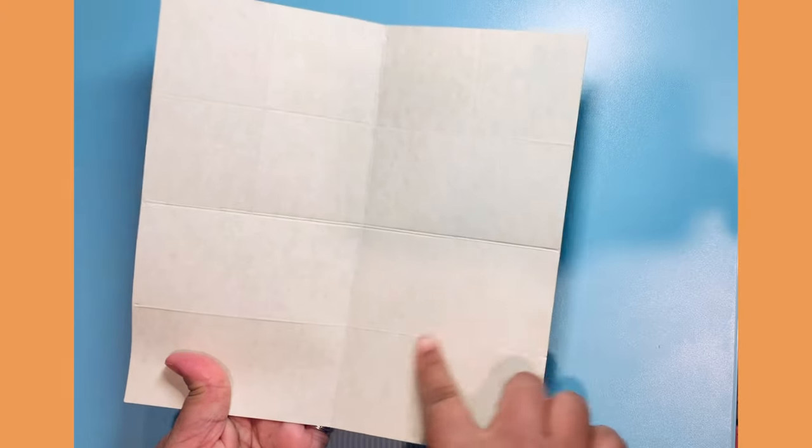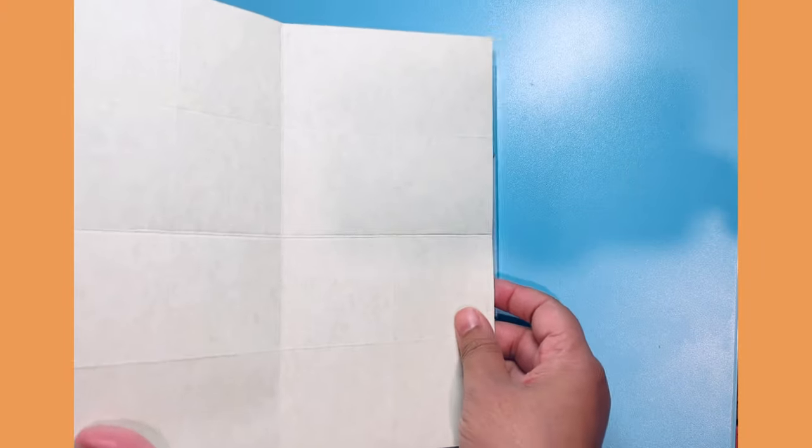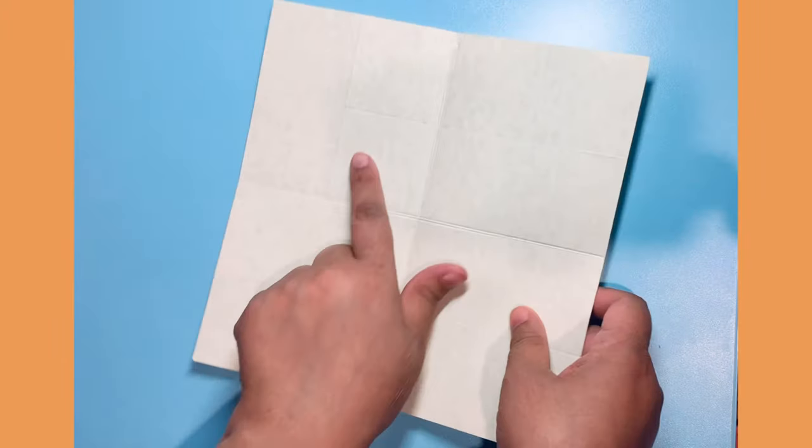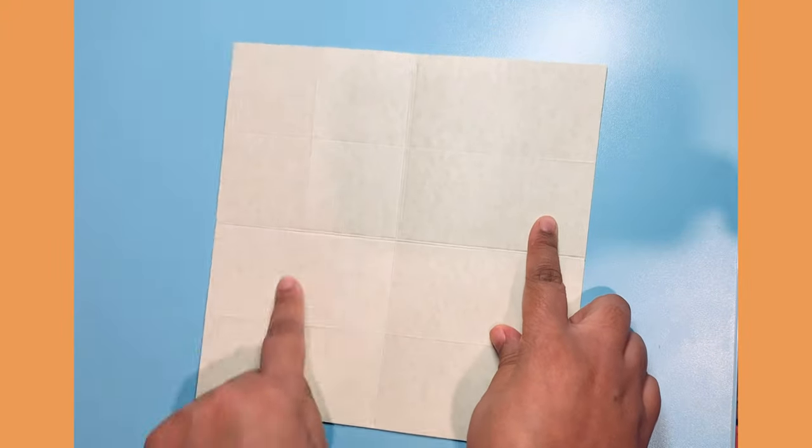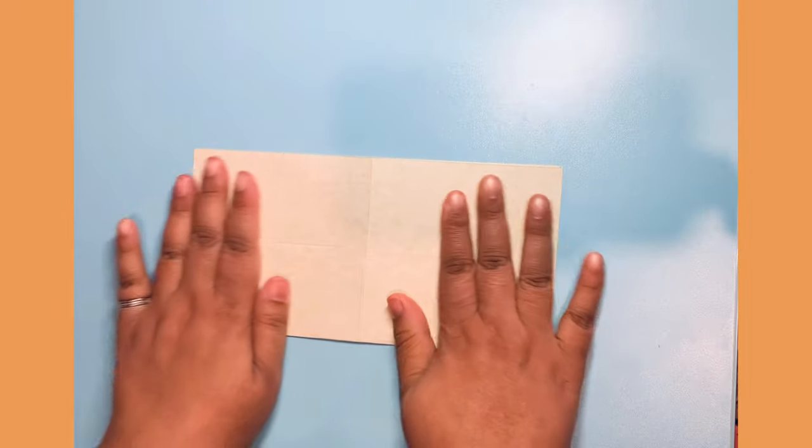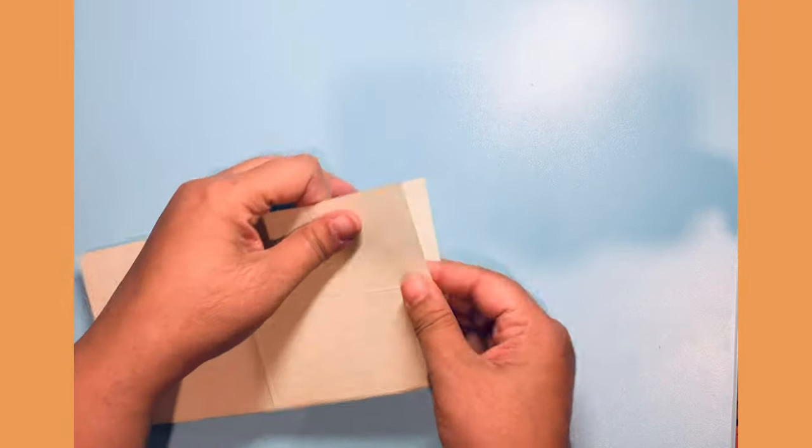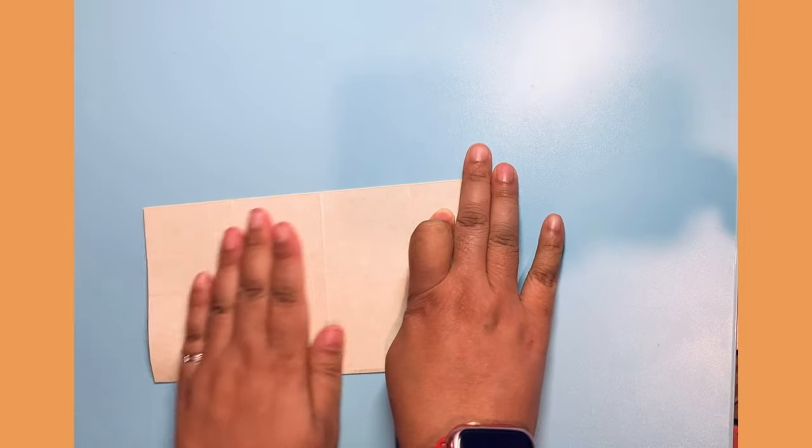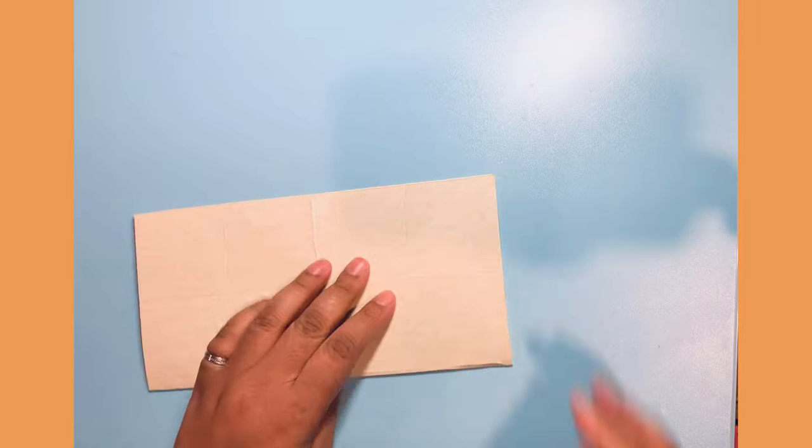So now we have all these score marks. I hope you can see. So the easiest way now is we need to cut out these four squares in the middle. So easiest way to do that is fold it, and then cut this out.